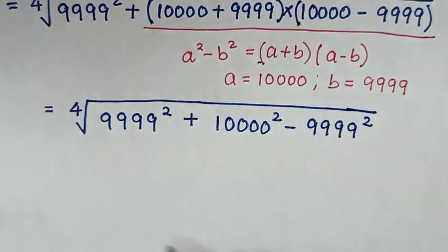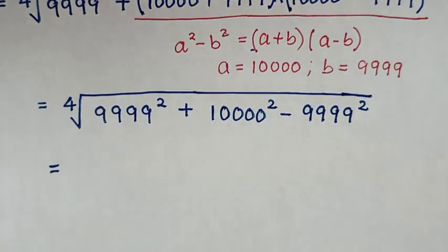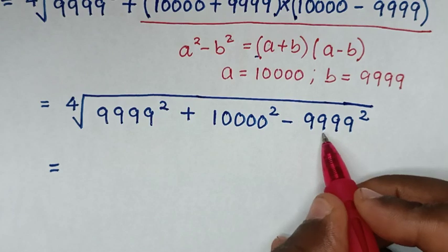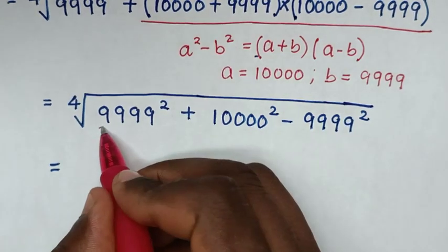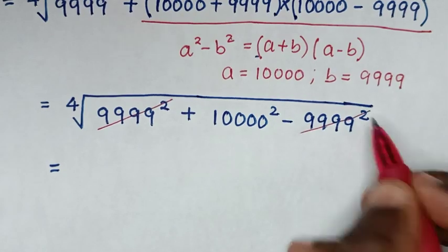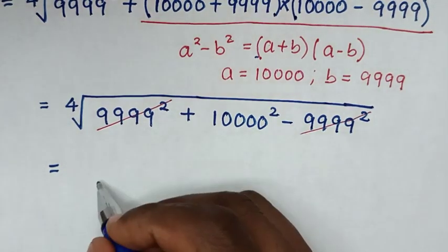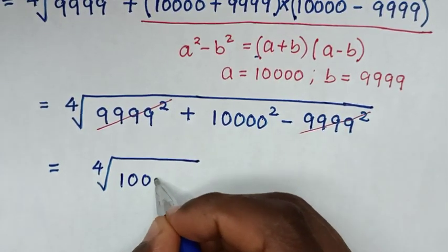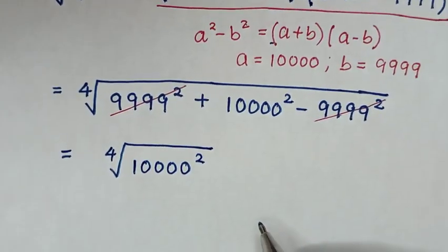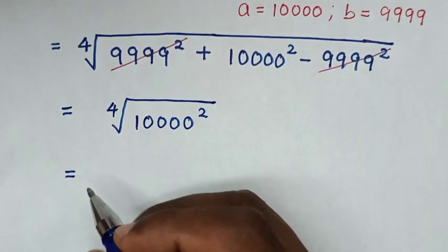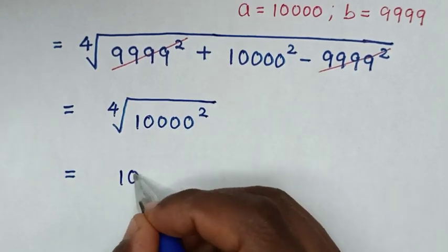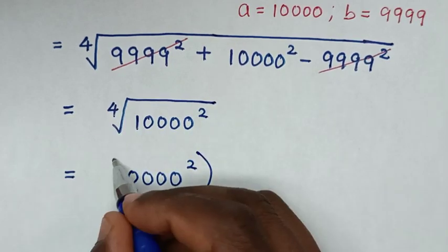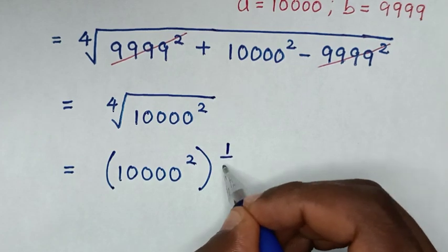The next step: 9,999 squared minus 9,999 squared equals 0, so these cancel. Then it will be the 4th root of 10,000 squared, which is the same as bracket to the power of 1 over 4.